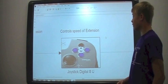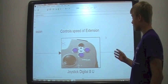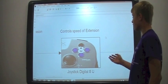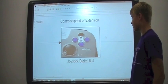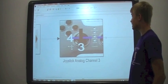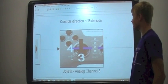This is the speed control for our extending arm and as you see it is digital A up. And this controls the direction of our extending arm.